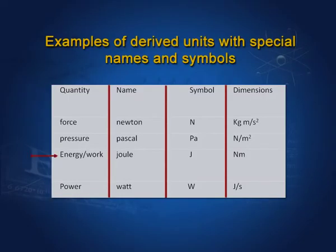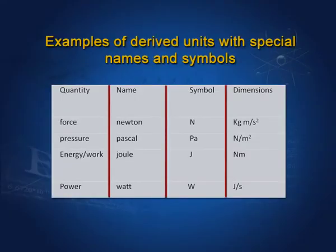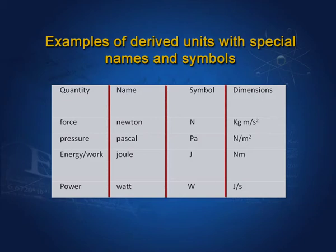Energy or work: the unit name is joule, spelled J-O-U-L-E with small j, symbol is capital J, and dimensions are N·m. Power: the unit name is watt, named after the great scientist Watt. The name Watt is capitalized, but the symbol is capital W — written to distinguish it from the name of the scientist. Power's unit is watt, symbol is capital W, and dimensions are joule per second.